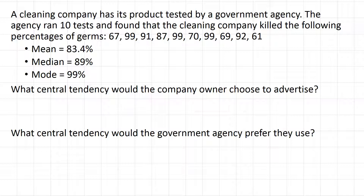The question is, what central tendency would the company owner choose to advertise? A company would want to advertise the highest they could get away with, which in this case would be the mode. The company would probably want to say, 'We kill 99% of germs,' and then add in fine print, 'most of the time.'